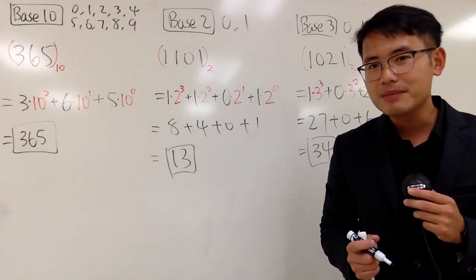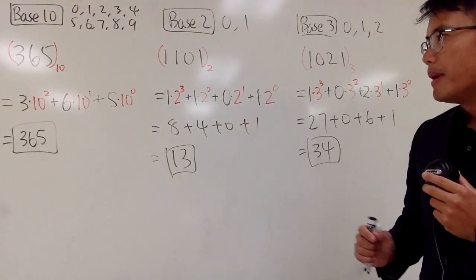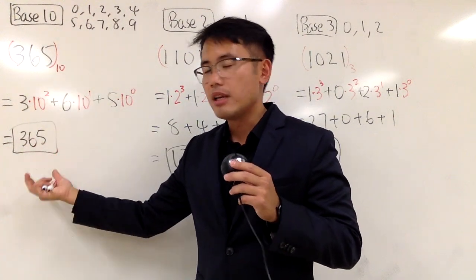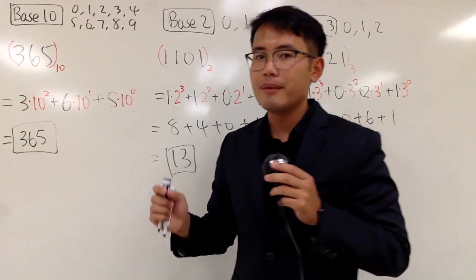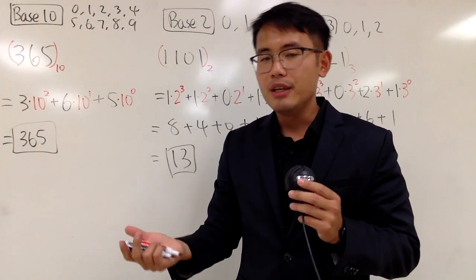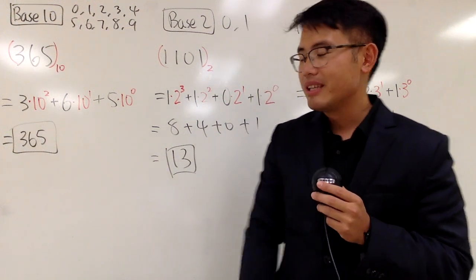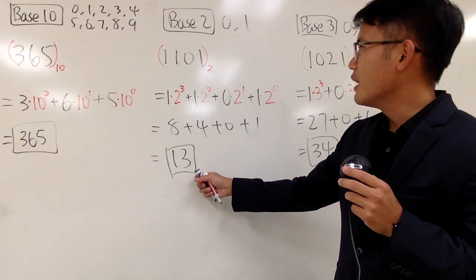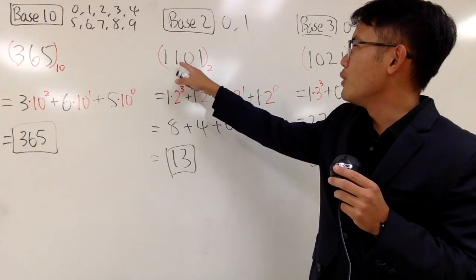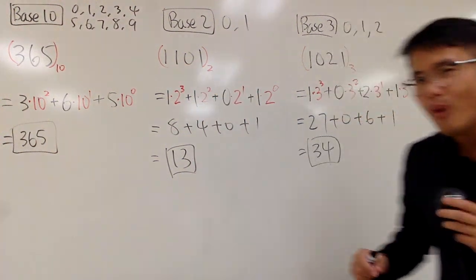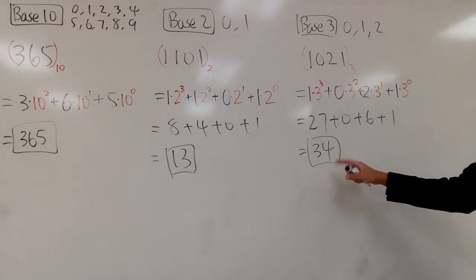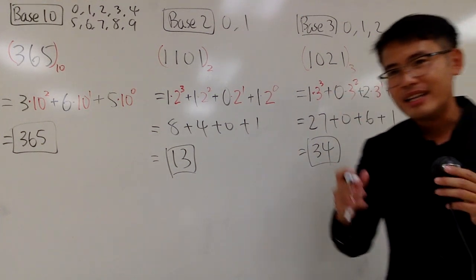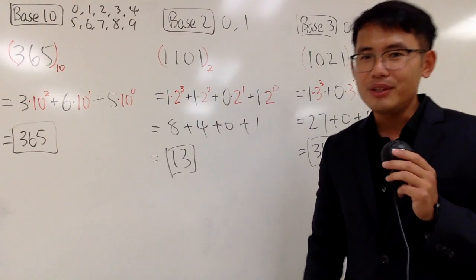And perhaps the next question is, what happens if you start with a base 10 number, let's say you have the value 365? How can you convert that into a base 2 number? Likewise, how can we go backward? Starting from 13, how can I write it as 1, 1, 0, 1 in base 2? Or if I start with 34, how can I write it as 1, 0, 2, 1 in base 3? And I will just work that out for you guys in the next video for that.